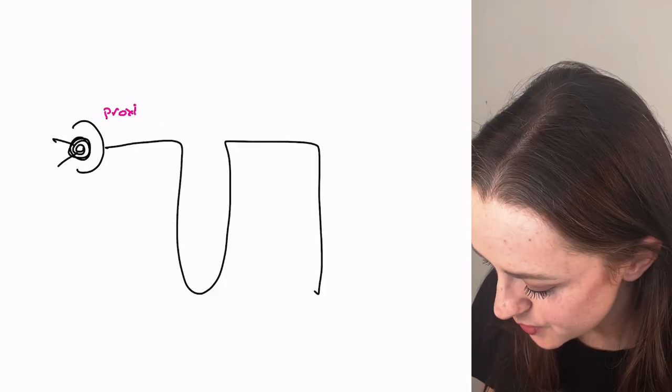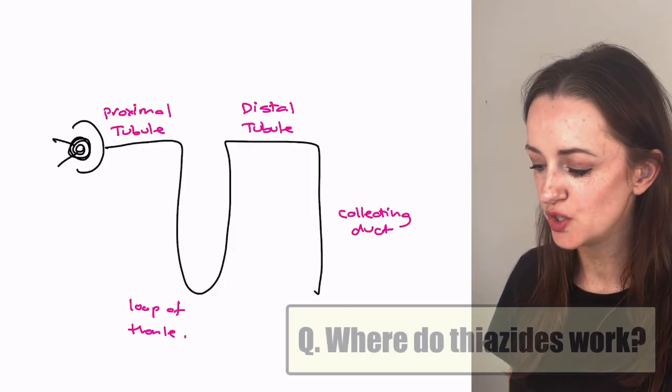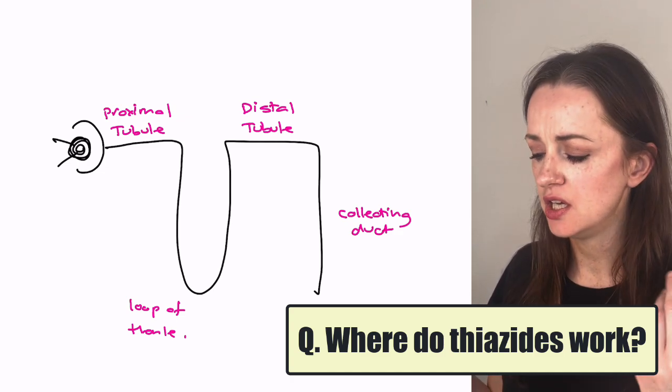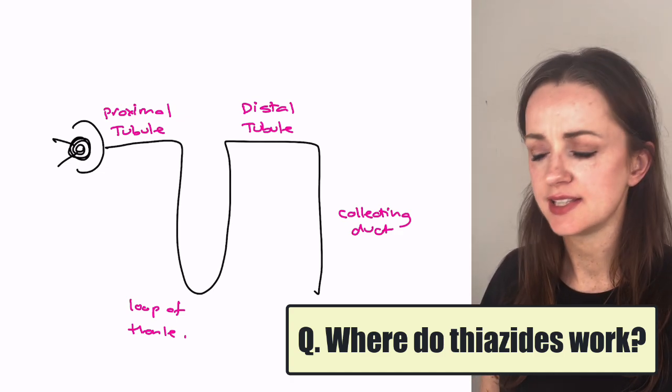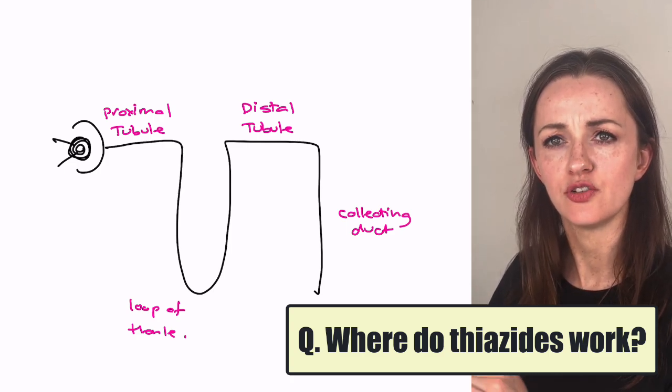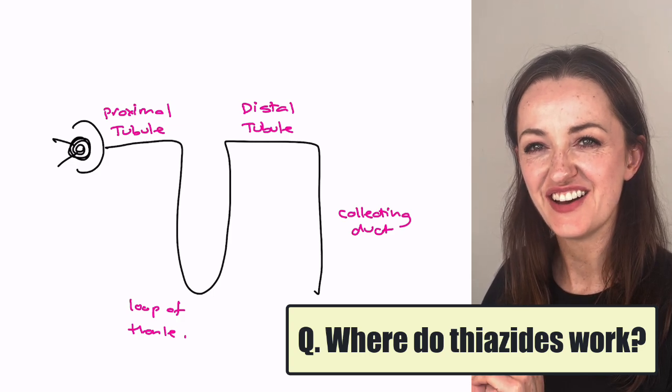Okay, so in order to understand why thiazides cause high calcium, we just need to have a little picture of the nephron set up. Okay, so now that we have that all set up, my first question for you is where on earth in this little nephron situation do thiazide diuretics actually work? Which part of this nephron do you think? You have a 25% chance of getting this right.